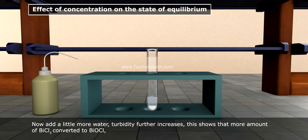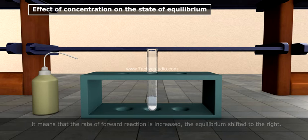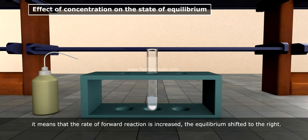This shows that more amount of BiCl3 is converted to BiOCl. It means that the rate of forward reaction is increased, the equilibrium shifted to the right.